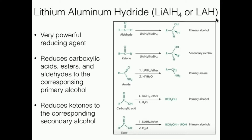LAH is a very powerful and strong reducing agent. Pretty much any of the functional groups we've seen so far, it will reduce. For aldehydes and ketones, sodium borohydride reduces these into their corresponding alcohols — aldehydes to primary alcohols, ketones to secondary alcohols. LAH does the same, but for aldehydes and ketones, sodium borohydride is generally preferred because lithium aluminum hydride can be very dangerous and sometimes can explode. If you can use sodium borohydride, it's preferred. However, for other functional groups like esters, thioesters, and more, we have to use LAH.